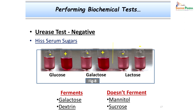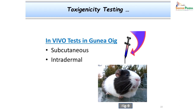After confirming colony morphology, biochemical tests were performed to differentiate from commensals that may mimic this bacterium. Urease test was done and was negative, as expected for Corynebacteria. Since this organism is fastidious, His serum sugars were used instead of regular sugars. This organism is known to ferment glucose, galactose, and dextrin. It does not ferment lactose, and there was no color change — it also does not ferment mannitol and sucrose. These biochemical tests helped focus the diagnosis of Corynebacterium.